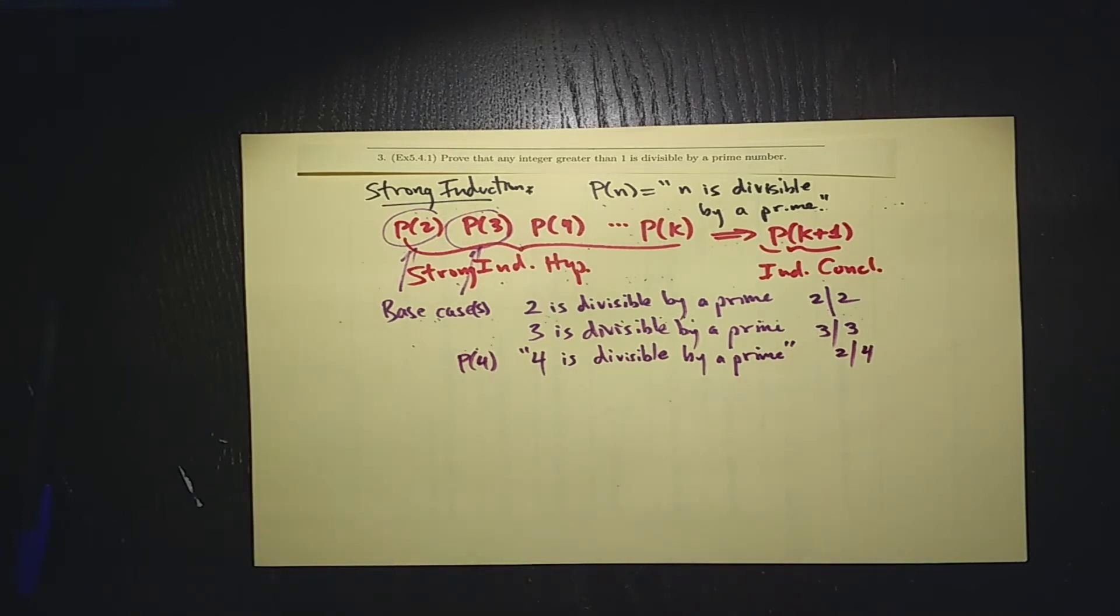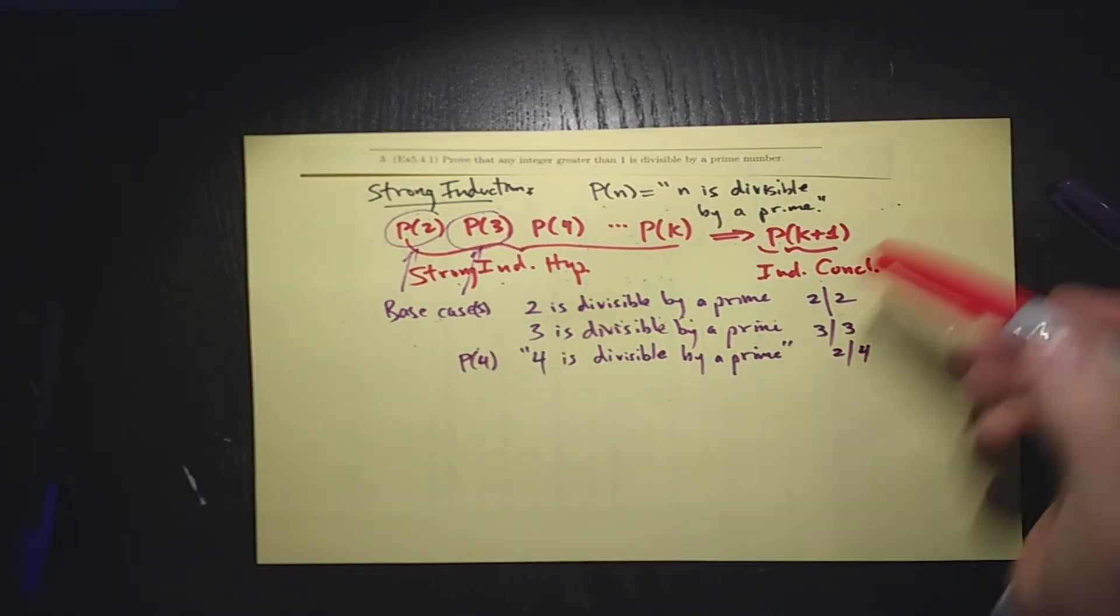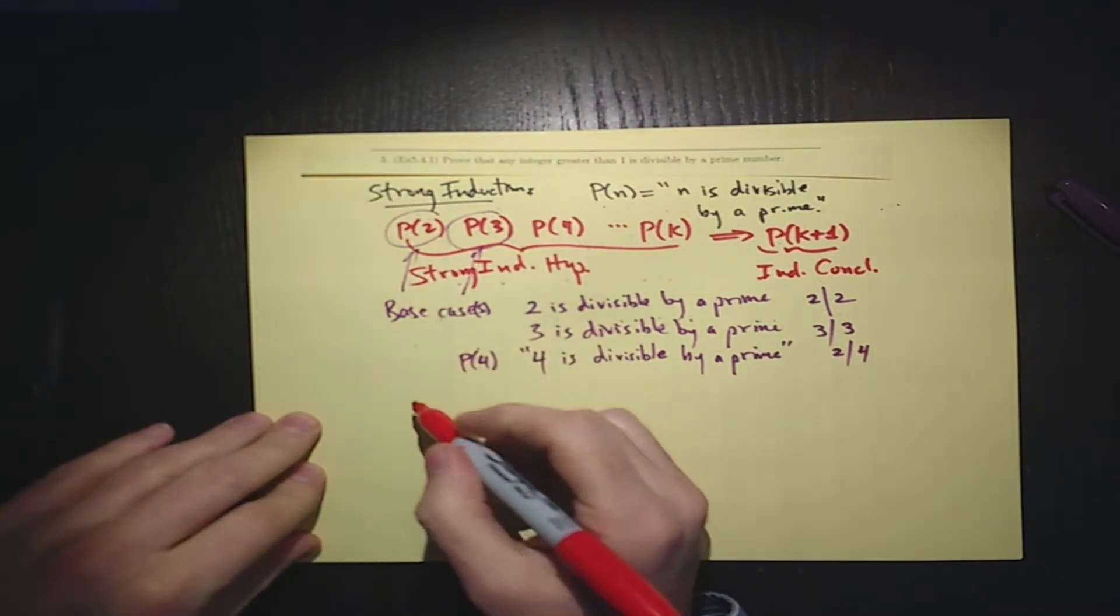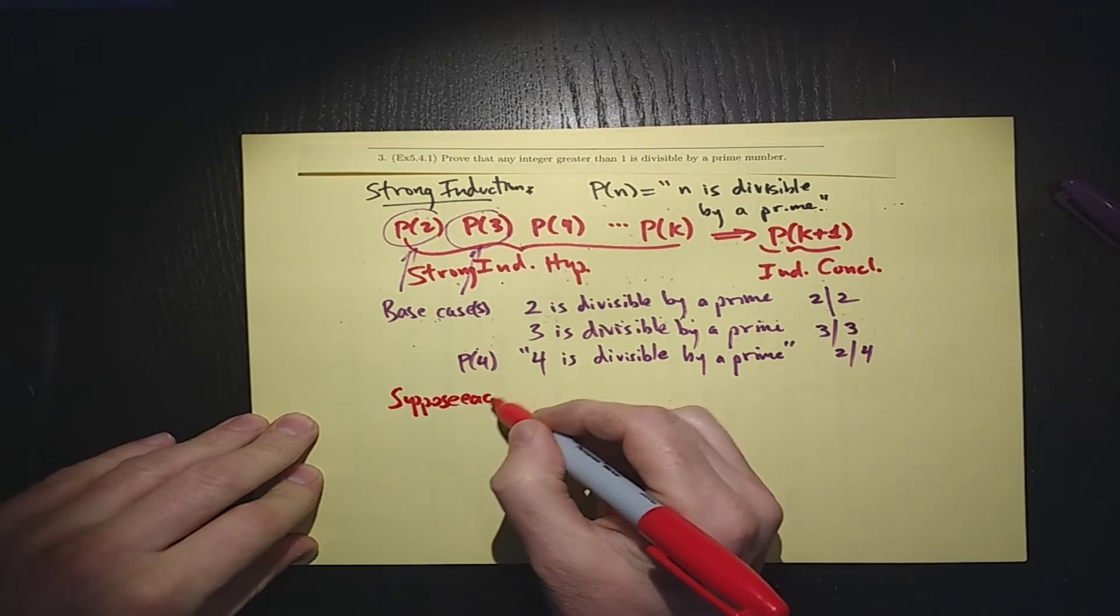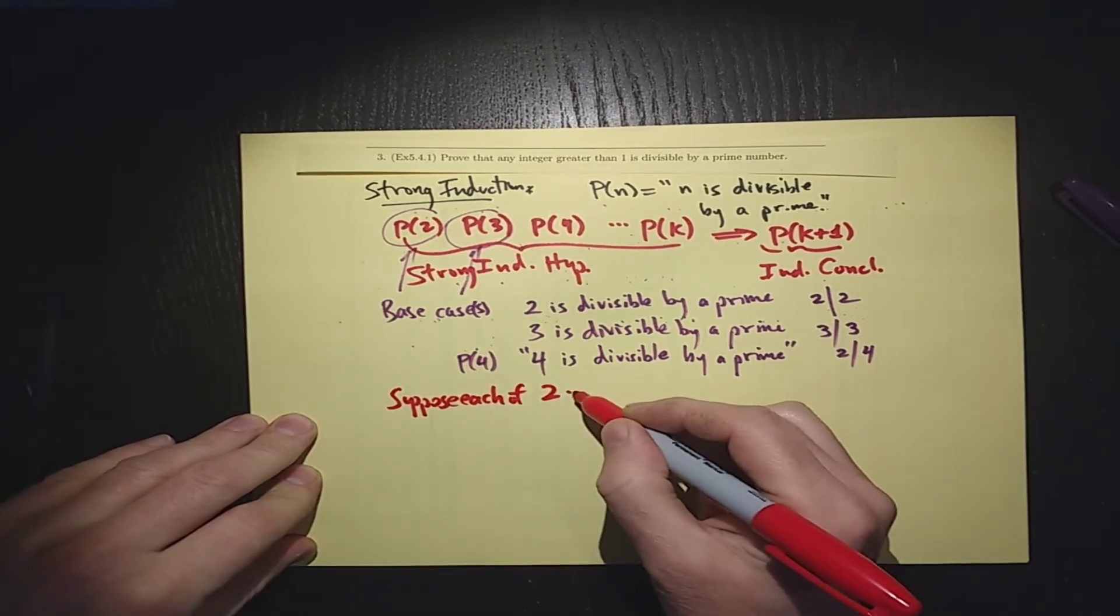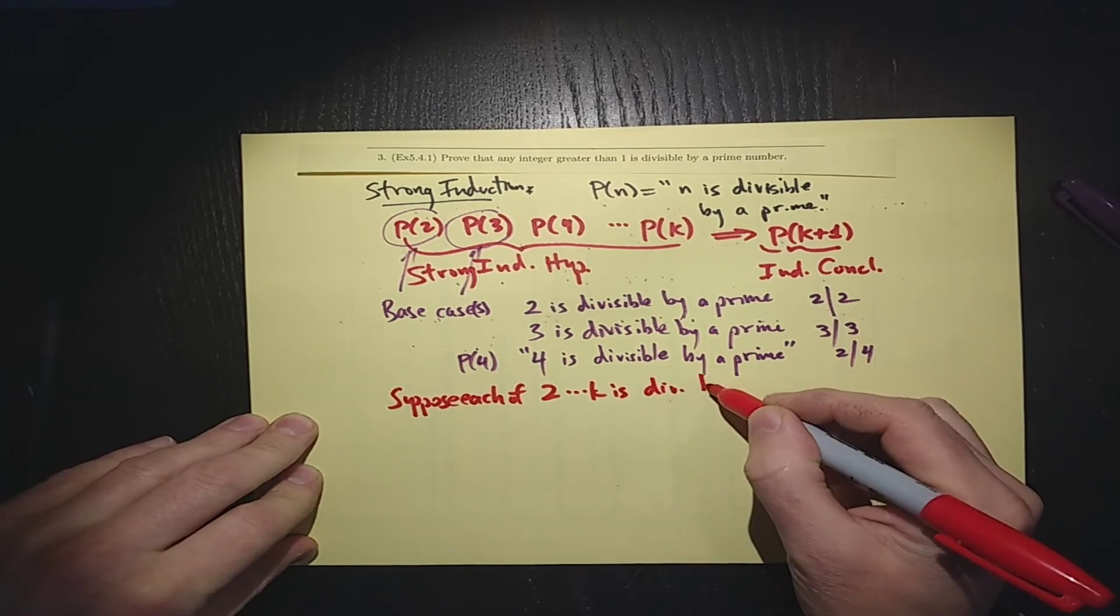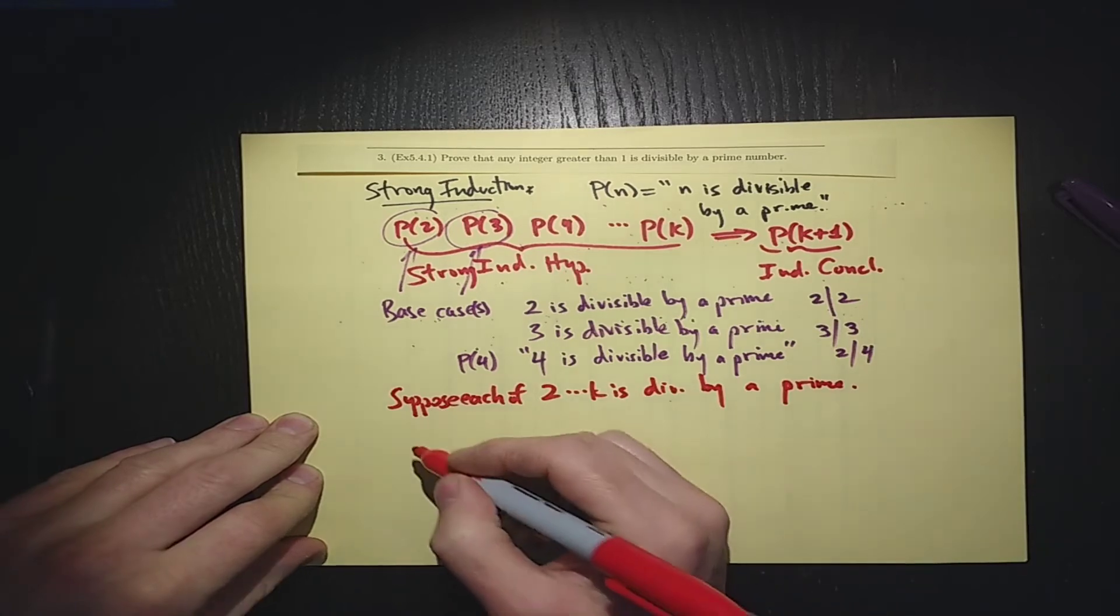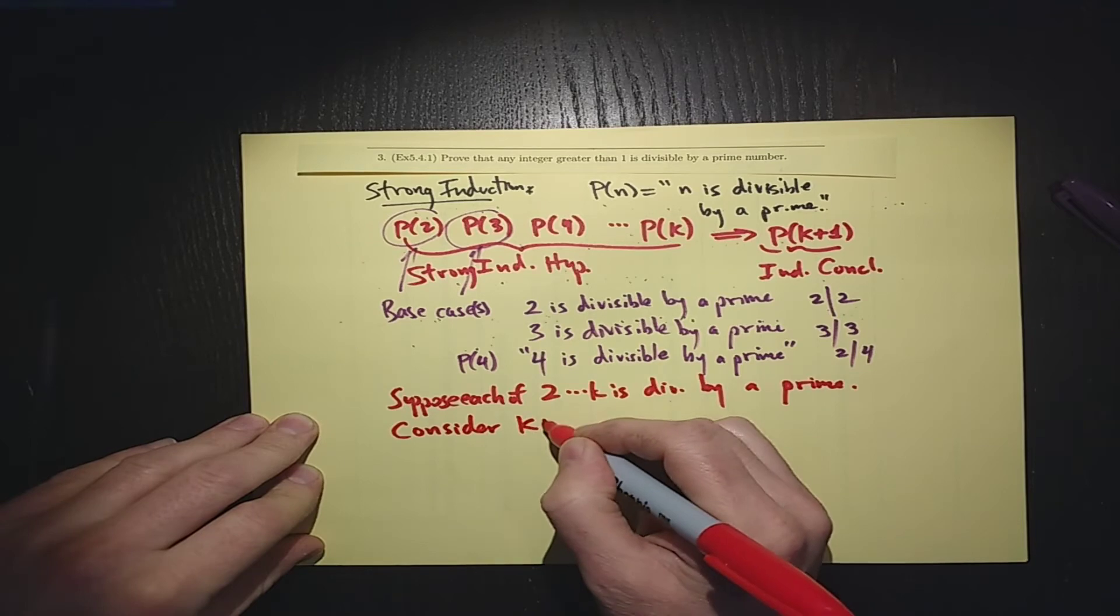So let's suppose that every number between 1 and k is divisible by a prime, and we have to show that k+1 is divisible by a prime. So suppose each of 2 up to k is divisible by a prime, and we're going to consider k+1.